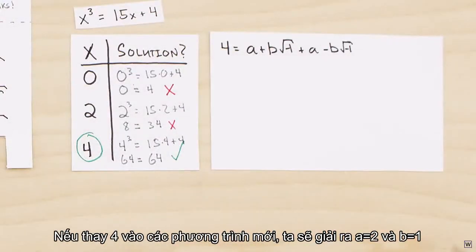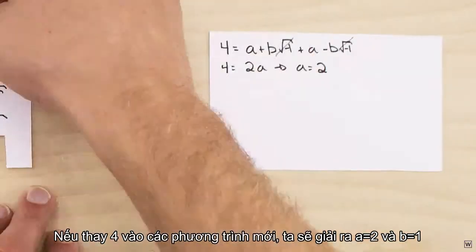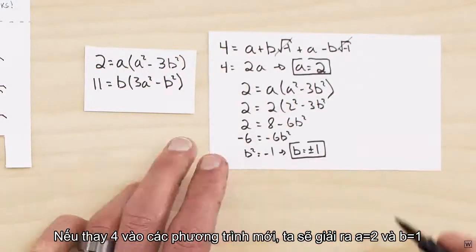If we substitute four into our new equations, we can solve for a and b and obtain a equals two and b equals one.